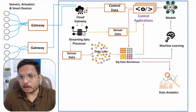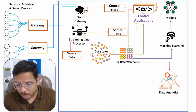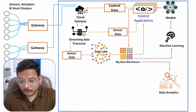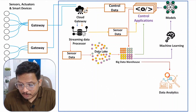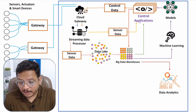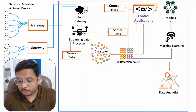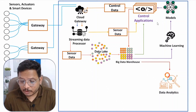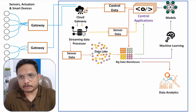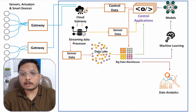Now I will explain the job of the control application. The control application will give commands to the actuators based on the programs stored inside these control applications. These control applications take inputs from real-time sensor data, and they can also take inputs from the Big Data Warehouse. Additionally, they can take inputs from high-end technologies like machine learning, artificial intelligence, or deep learning. Based on these inputs, it will decide certain parameters using algorithms and programs, and will send commands to the actuators, causing our IoT application to provide a physical response.